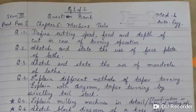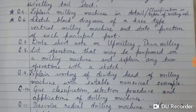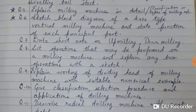Question number 4: Explain different methods of taper turning; explain with diagram taper turning by offsetting the tailstock. Question number 5: Explain milling machine in detail, or classification or types of milling machines — this question was asked in December 2017. Question number 6: Sketch a block diagram of a neat vertical milling machine and state the function of each principal part — this question was also asked in December 2017.